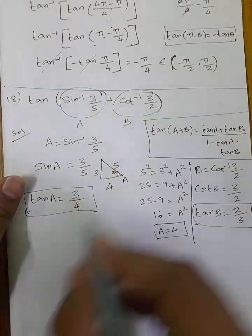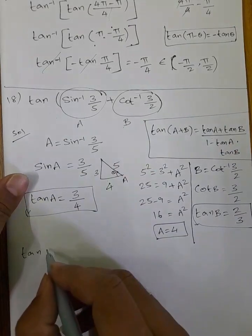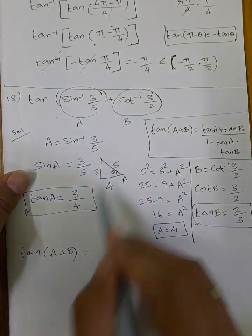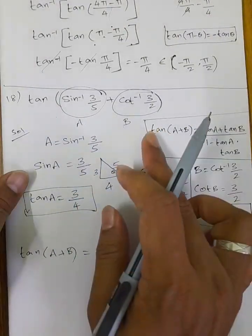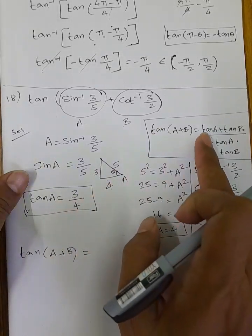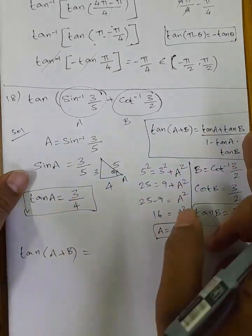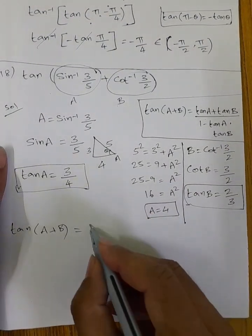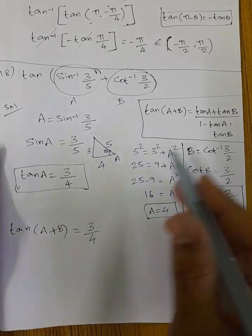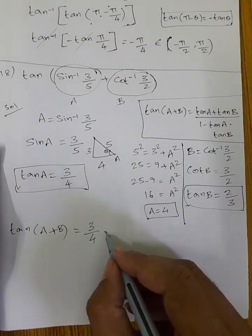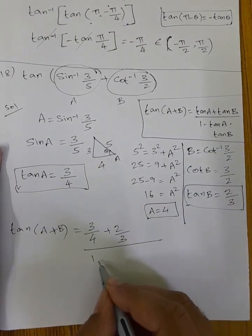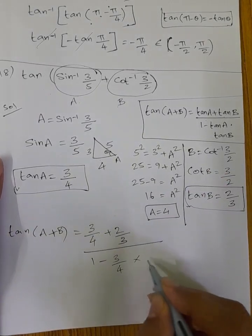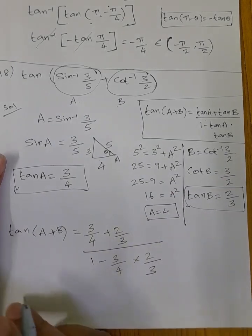Our formula is tan(A+B). Where A = sin inverse of (3/5) and B = cot inverse of (3/2). Substituting: tan A = 3/4 and tan B = 2/3. So tan(A+B) = (3/4 + 2/3) divided by (1 minus 3/4 into 2/3).